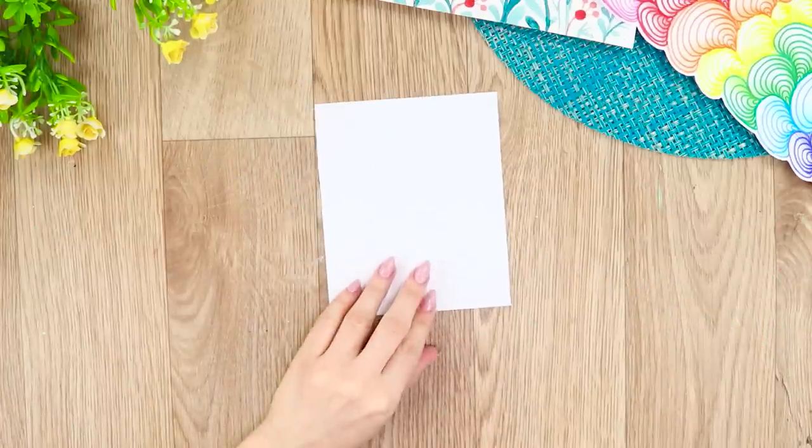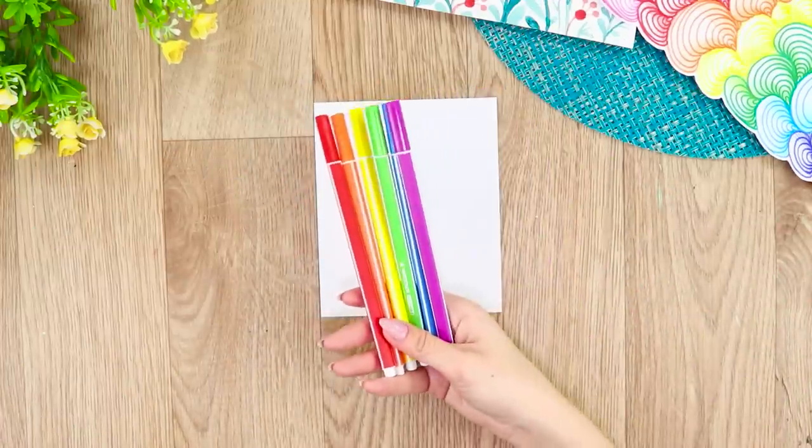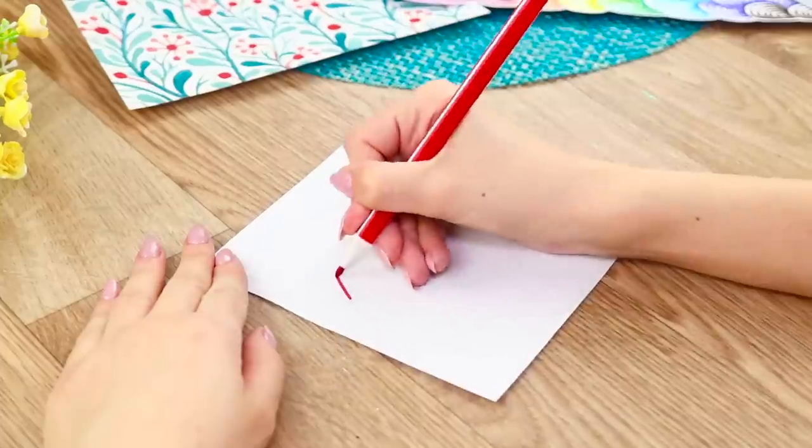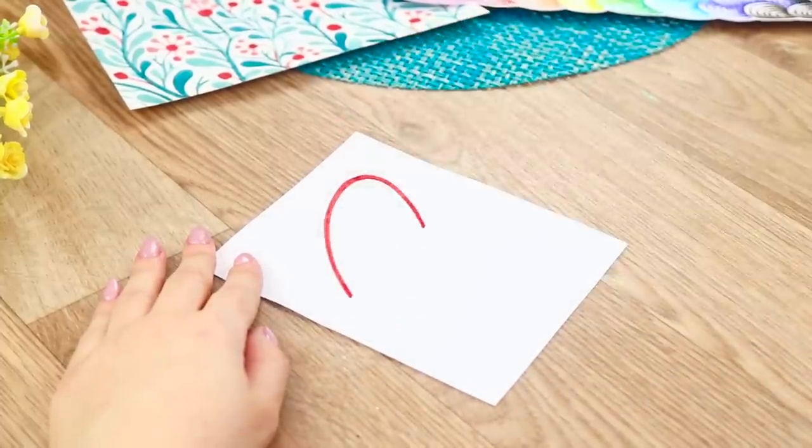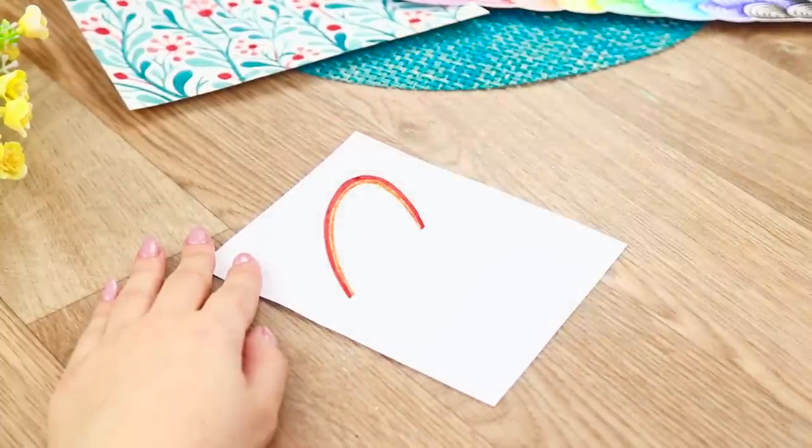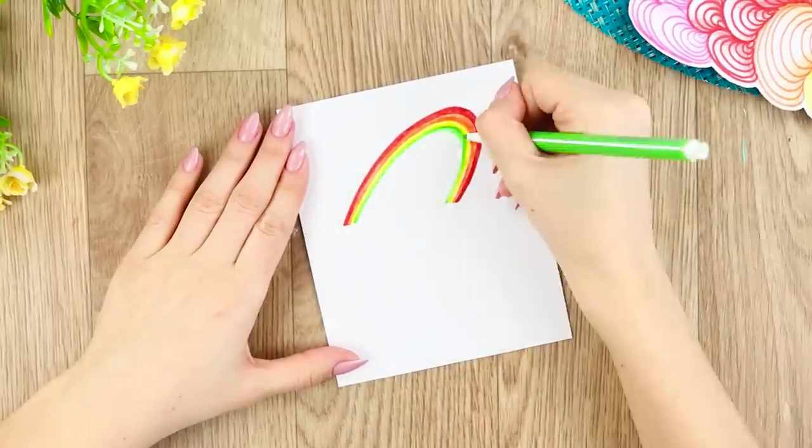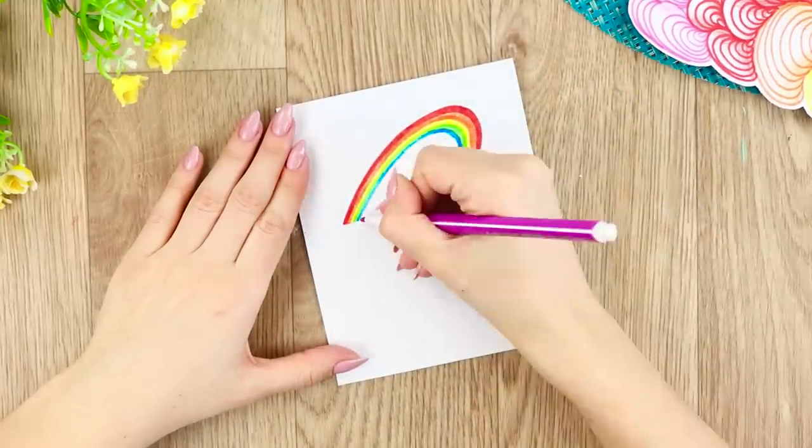Let's create the next masterpiece with the help of markers. Draw an arch in red like this. Go over the line. Next, draw an orange arc below it. Then yellow, green, blue, and purple to make a rainbow.